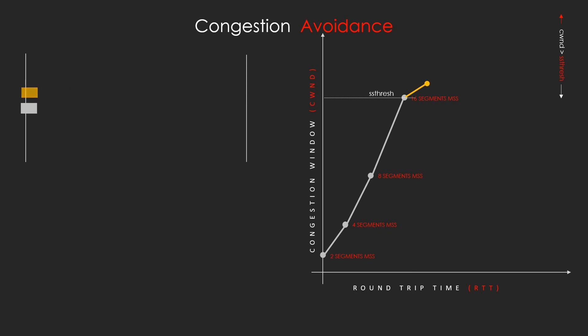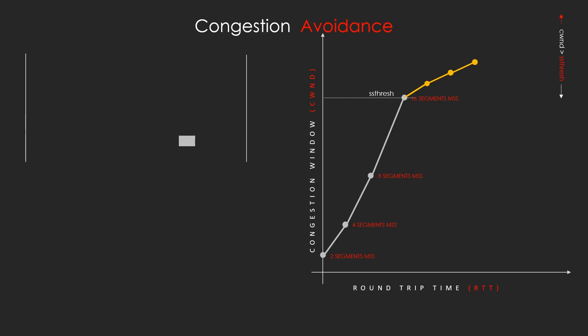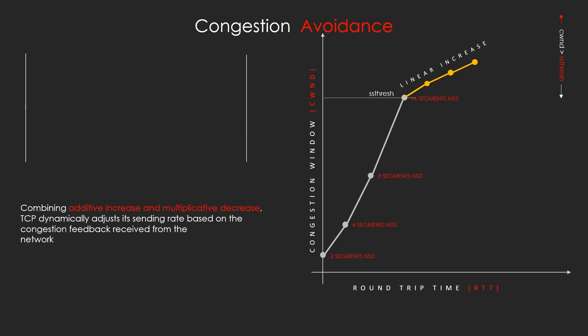By combining additive increase and multiplicative decrease (AIMD), TCP dynamically adjusts its send rate based on congestion feedback received from the network. This mechanism helps TCP obtain a fair share of available bandwidth while avoiding overloading the network and allowing other flows to have their fair share as well.